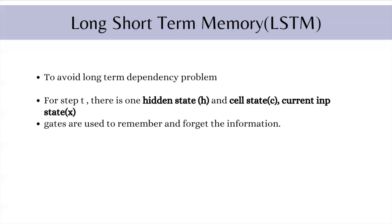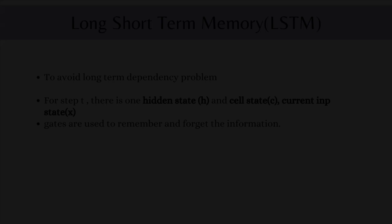The basic idea of LSTM is to remember some information and to forget some information. LSTMs can read, erase, and update information. In LSTM, for any timestamp t, there is one hidden state h and cell state c, and the current input state x. Cell states in LSTM are like memory blocks which store information. For example, if someone is appreciating your work, you will remember words like 'awesome,' 'good going,' 'keep it up' — you may not remember the exact line. Similarly, LSTM will remember some information and forget some information.